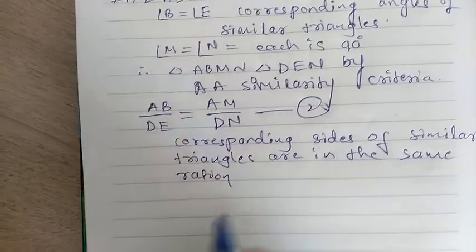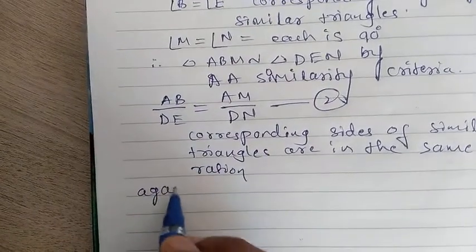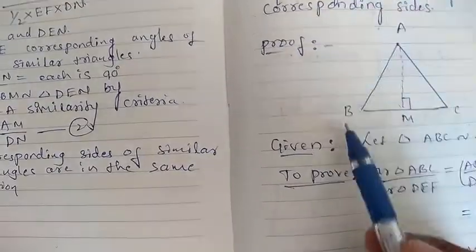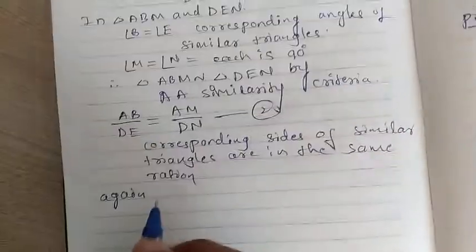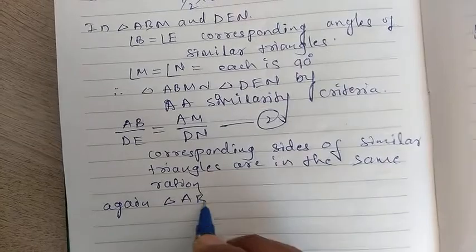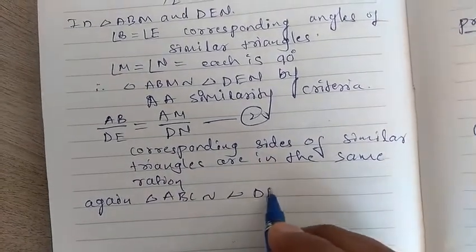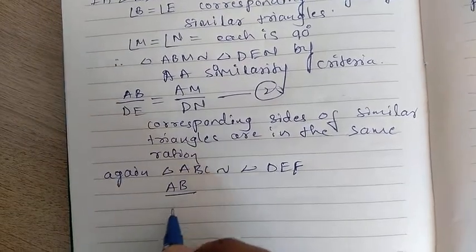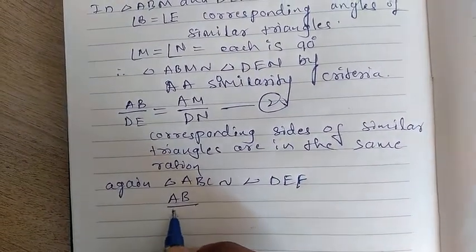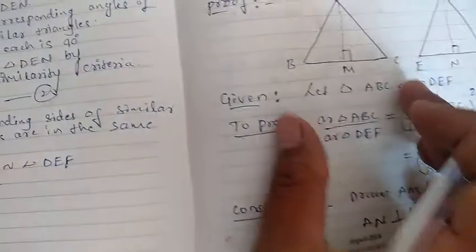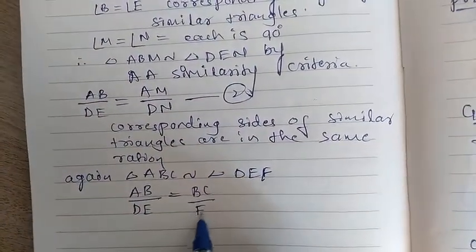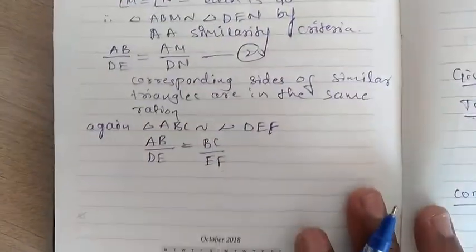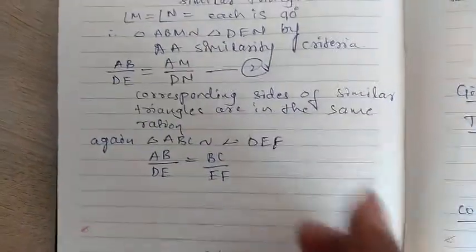Again, triangle ABC is similar to triangle DEF — they are given. So these two similar triangles give us: AB divided by DE is equal to BC divided by EF, because corresponding sides are in the same ratio. This is equation 3.